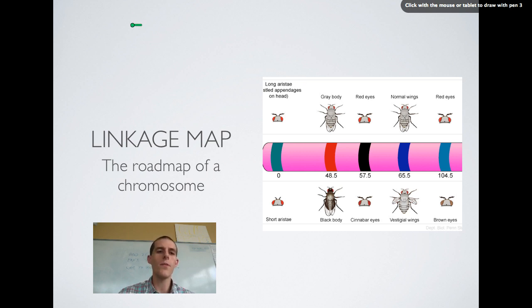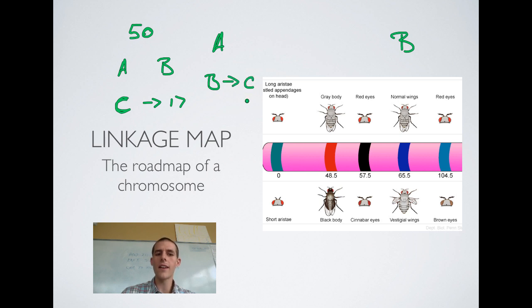So the way it kind of works is that he would do a breeding experiment and he would find that let's say 50% of the time genes A and B crossed over. So 50% is almost like saying that those two things are on separate chromosomes. So if we were to put them on a single chromosome, A is a really long ways from B. And then he would find that let's say we are talking about gene C. Gene A and C, let's say that they are together something like 17% of the time. And genes B and C are together like 33% of the time.